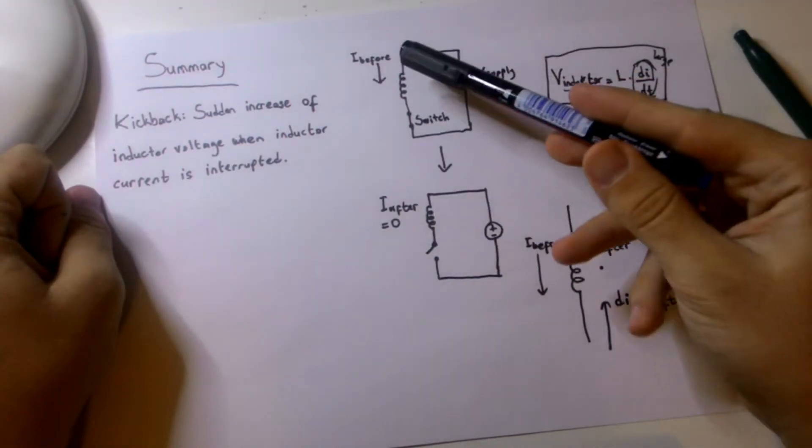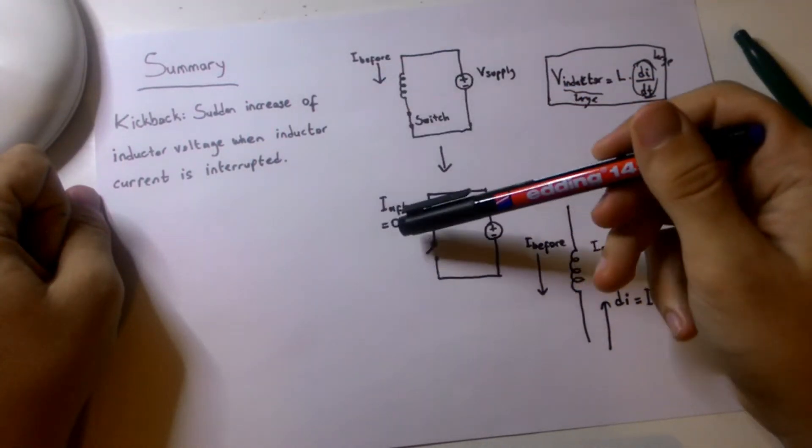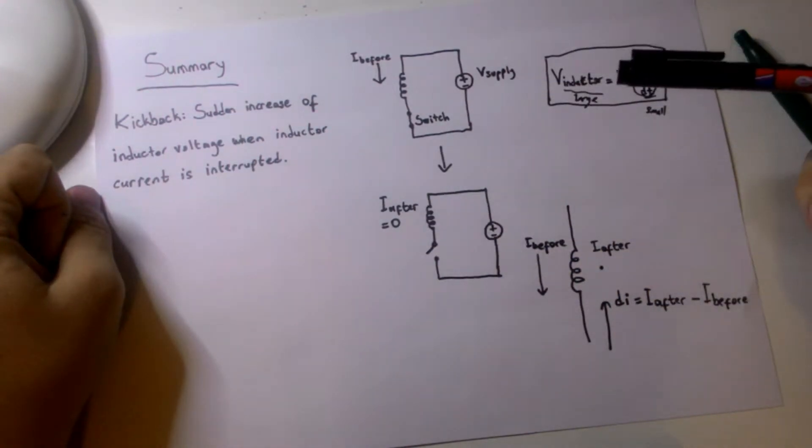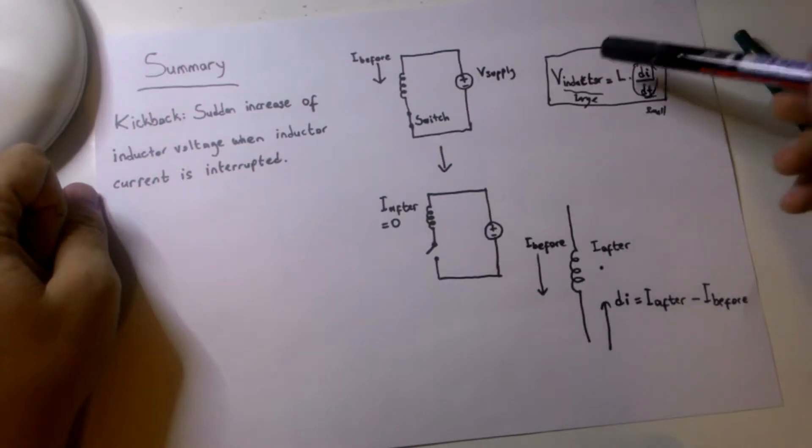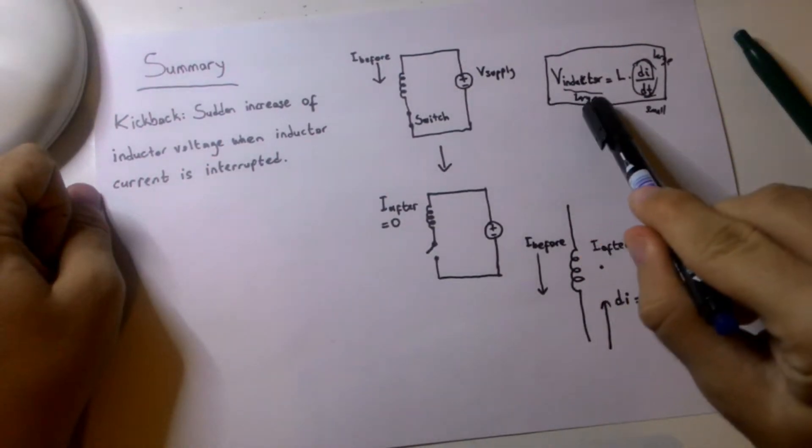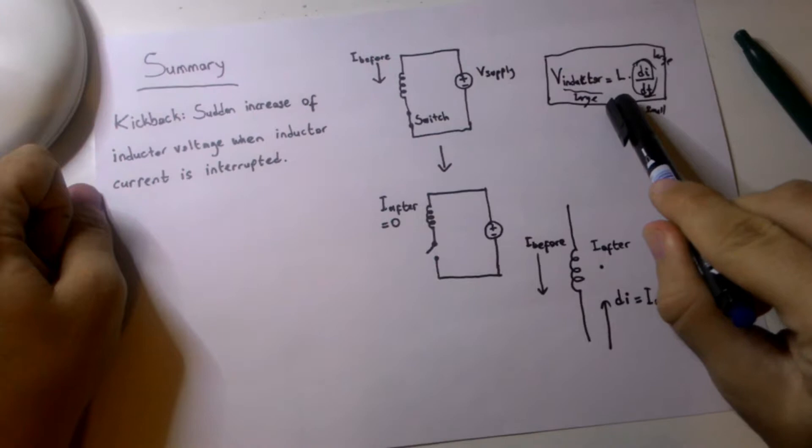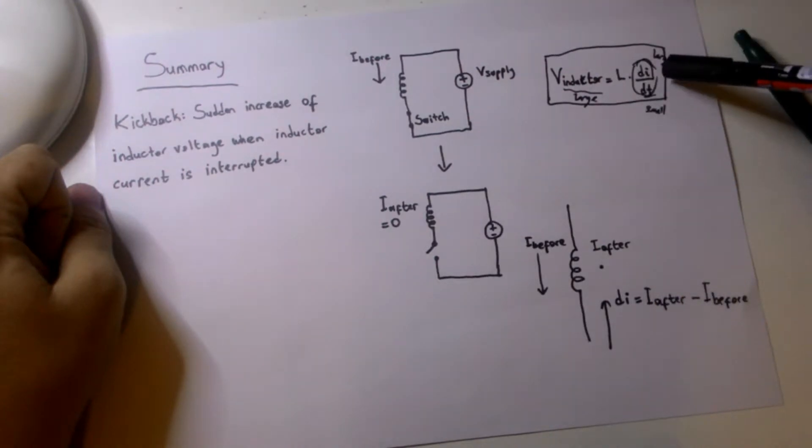But what happens if I just happen to open the switch? When I open the switch the current will suddenly drop to zero and that's going to cause some problems because my inductor voltage is defined by the formula V_inductor equals inductance times the change of current in time.